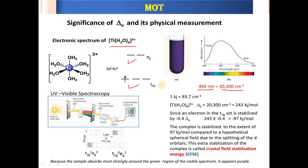The electron is excited from the T2G orbital to the EG orbital — from the lower level to the higher level. Due to this excitation, the complex appears purple in color. This color arises because the complex absorbs radiation at approximately 494 nm or 20,300 cm⁻¹. The CFSE value for [Ti(H₂O)₆]³⁺ was calculated as −8,000 cm⁻¹.